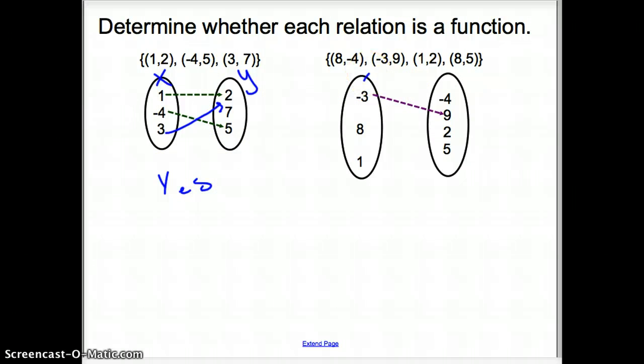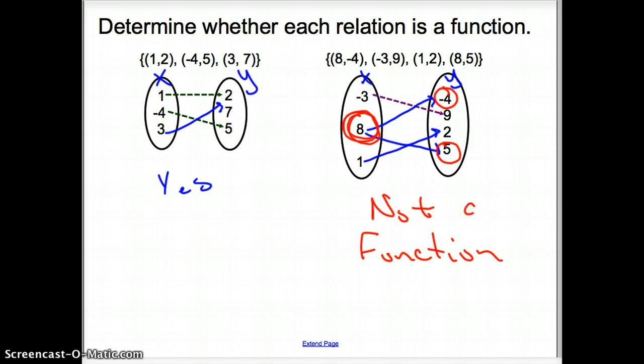Now, here, look over here. x, y. We have 8 goes to negative 4. Negative 3 goes to 9, which is already drawn in for us. 1 goes to 2. And now, be careful here because 8 goes to 5. So, now, we have 2 y's for 1 x. We can only have 1 y for 1 x. So, because 8 goes to negative 4 and 8 goes to 5, this is not a function.